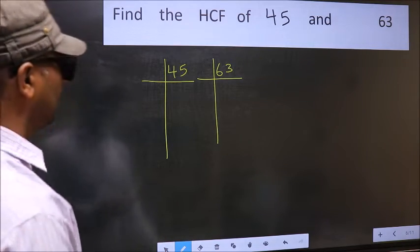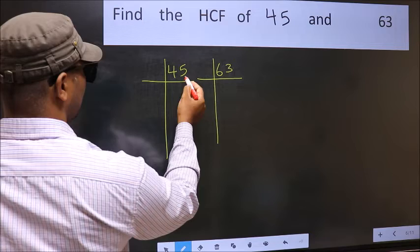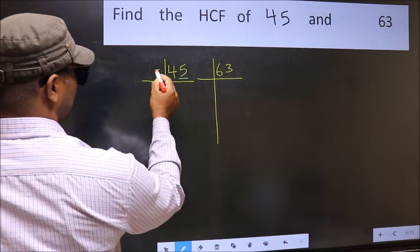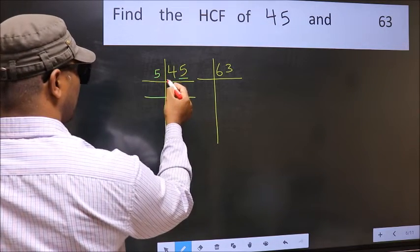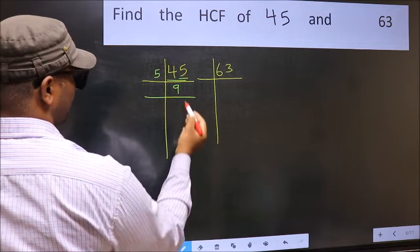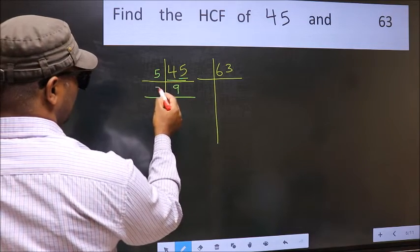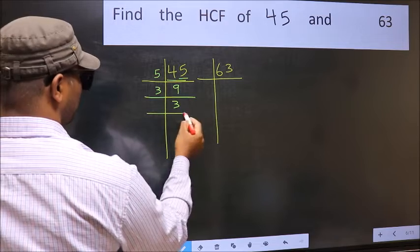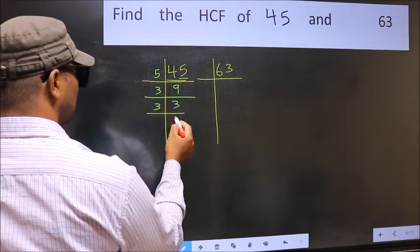Next, in this number, last digit is 5, so take 5. When do we get 45 in the 5 table? 5 nines, 45. Now 9 is 3 times 3 is 9. Now 3 is the prime number, so 3 once is 3.